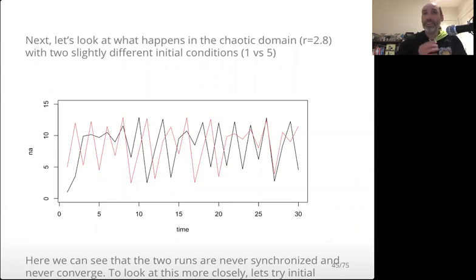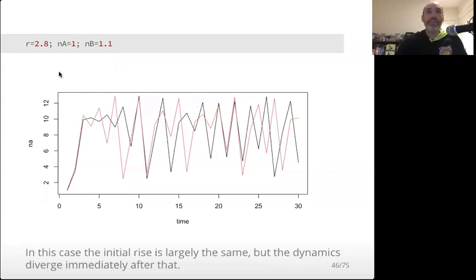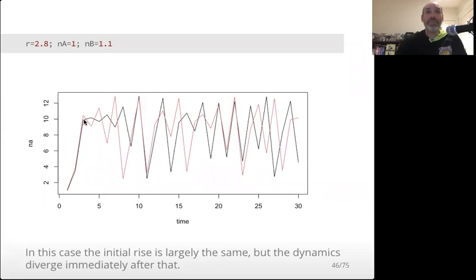We might ask: what if the initial conditions are more similar to each other — do they converge if they start off near each other? Bringing the two initial conditions much closer: run a starts at 1, run b starts at 1.1 — only off by 0.1. We can see they both go up in sync, but the second one overshoots a little bit more than the first. Even though they rise up together, they diverge pretty much immediately after that. If they come into sync at any point, it's almost by chance.